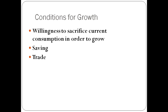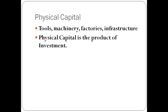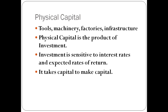Next, we're going to look at a few factors that promote long-run economic growth. The first one is physical capital — we're talking about tools, machinery, factories, and infrastructure. Physical capital is a product of investment, which means producing today in order for a future payoff. Investment is sensitive to interest rates and expected rates of return. It takes capital to make capital — machines are used to make new machines, for example. And capital definitely needs to be maintained. Economists have a term for a society as it accumulates more and more capital and achieves higher, longer economic growth: capital deepening.